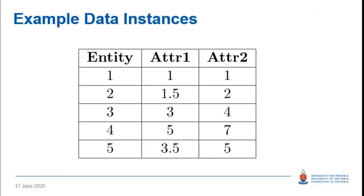Here is an example dataset. Suppose these are the data instances in your training set — you've got different entities, which could be flowers, cars, or anything. There are five data instances, each with two attributes. For example, if these were flowers, the attributes might be flower color and petal shape, each represented as integers. So each data instance has dimension two.